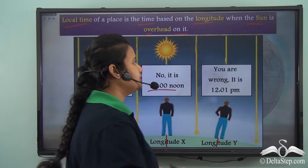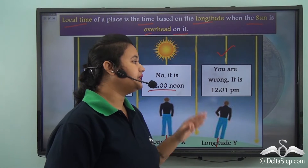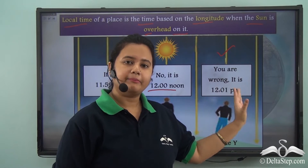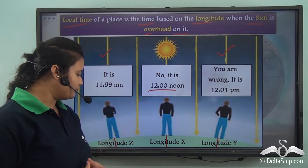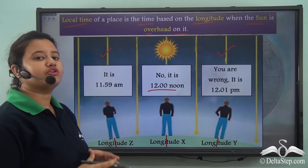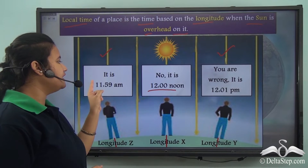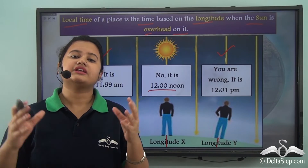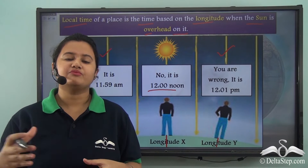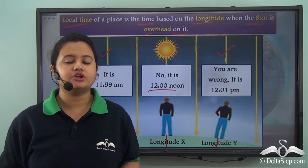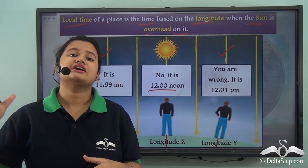If the sun were overhead over longitude y, then the local time of that place would have been 12 noon instead of 12:01 pm. Again, if the sun were overhead longitude z, then the local time of that place would have been 12 noon instead of 11:59 am. So, all places lying on the longitude where the sun is overhead have 12 noon as their local time.